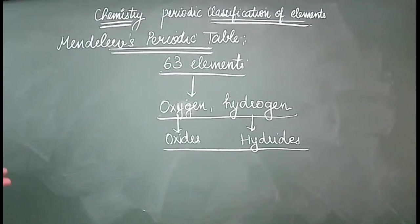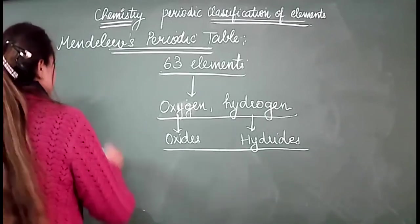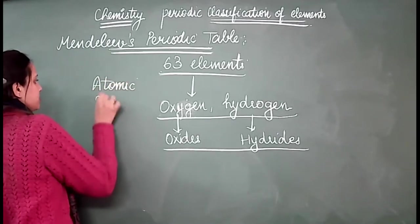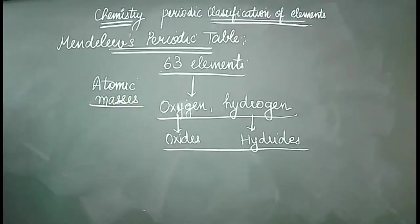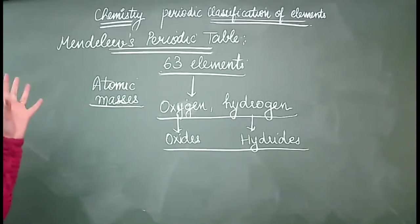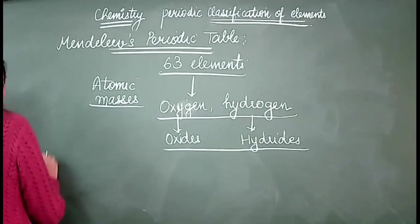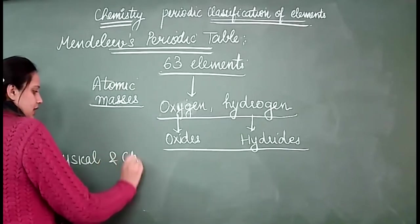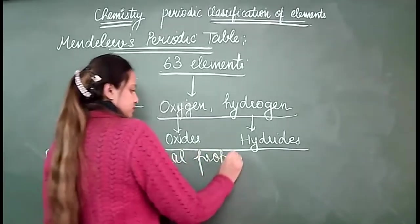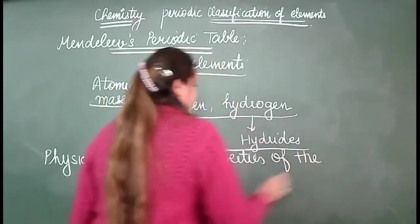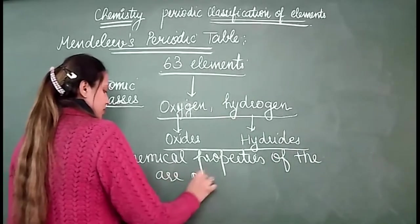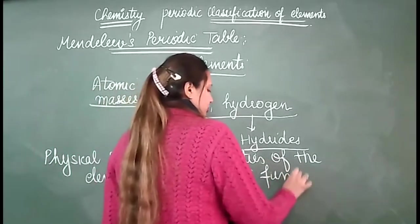He started looking for an order and arranged them according to the concept of atomic masses. This arrangement was based on atomic masses. After visualizing the individual properties of these elements based on their atomic masses, what he concluded was that all the physical and chemical properties of the elements are the periodic function of their atomic masses.